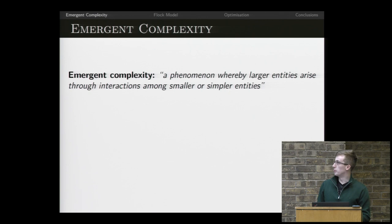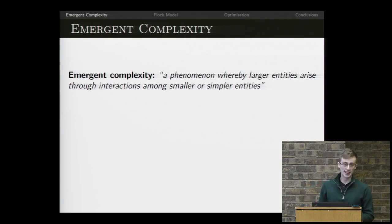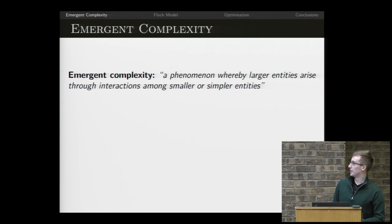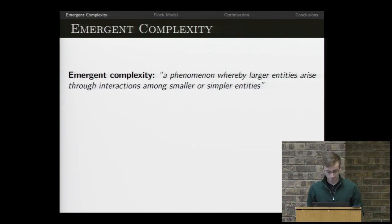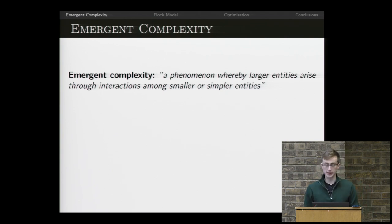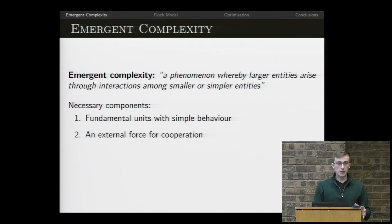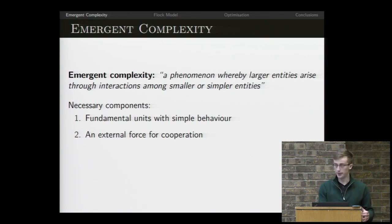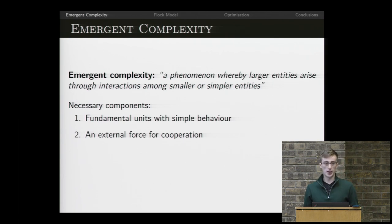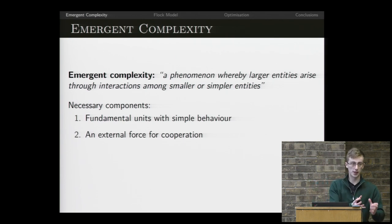I've put a definition of emergent complexity up there because it's the one used in literature: 'A phenomenon whereby larger entities arise through interactions among smaller or simpler entities.' Essentially, emergent complexity requires two things: fundamental units in a system that have some simple behavior we understand, and an external force that drives those things to cooperate in some way.